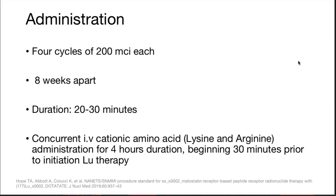Duration of infusion is around 20 to 30 minutes. Concurrent IV cationic amino acids — lysine and arginine — are used over four hours duration, started 30 minutes prior to initial lutetium therapy. This is because PRRT is nephrotoxic, and these amino acid anions decrease the nephrotoxic effect of PRRT.